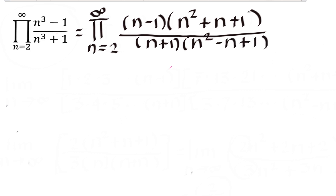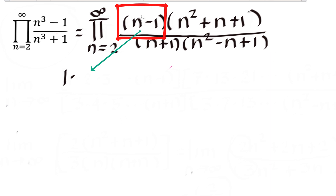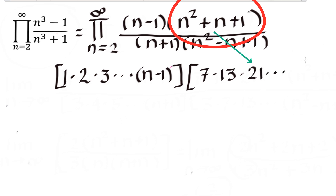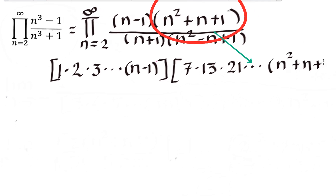Let's take some values for n, iterating from 2 up to infinity. For the numerator's first factor (n minus 1): when n equals 2 it is 1, when n equals 3 it is 2, when n equals 4 it is 3, and this pattern repeats until n minus 1. For the second factor (n squared plus n plus 1): when n equals 2 it is 4 plus 2 plus 1 equals 7, when n equals 3 it is 9 plus 3 plus 1 equals 13, when n equals 4 it is 16 plus 4 plus 1 equals 21, and the pattern continues until n squared plus n plus 1.